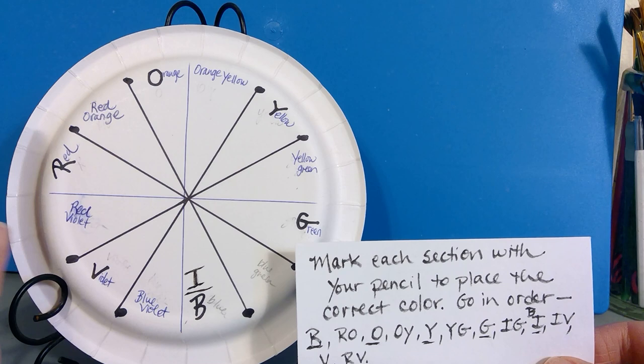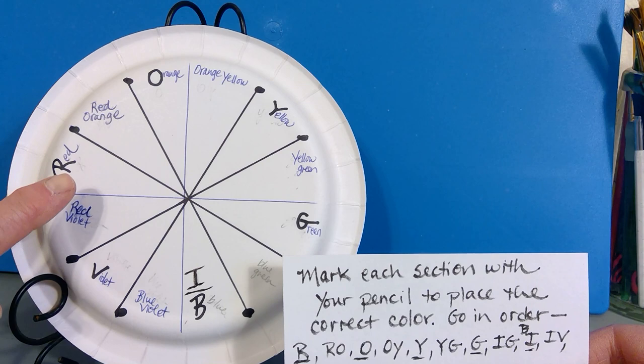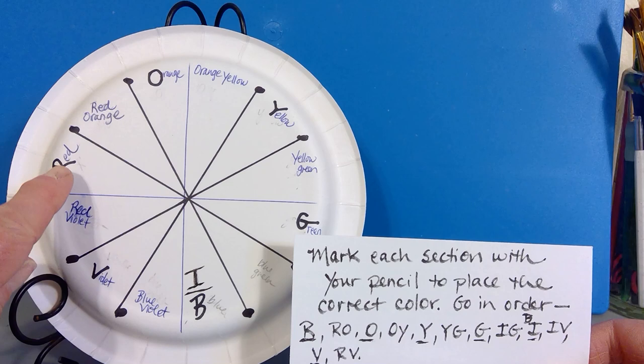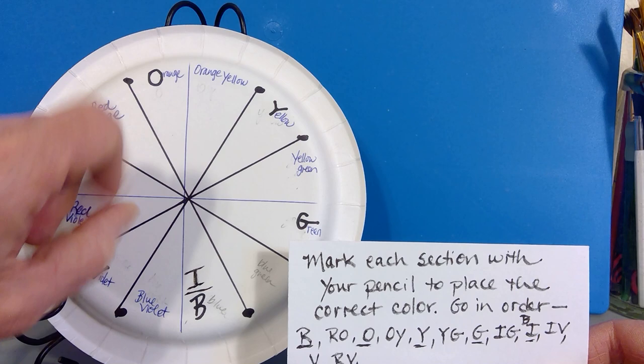If you'll notice, it's going to definitely have your ROYGBIV order. So here you have red. Then you're going to have red orange. You have orange. Then you're going to have orange yellow, yellow, yellow green, green. Here's blue green.